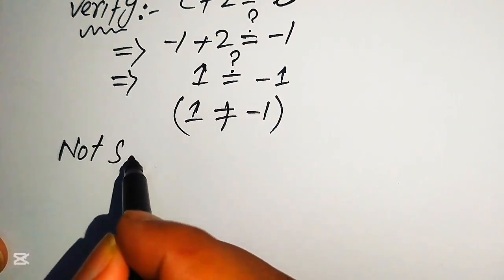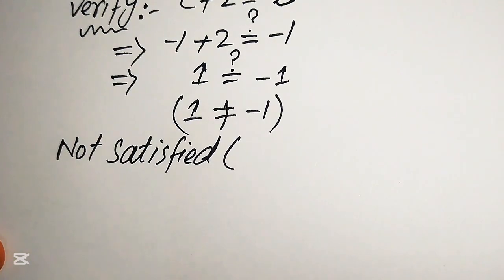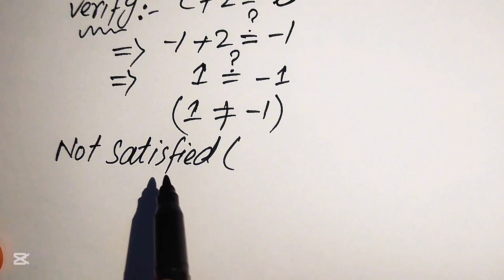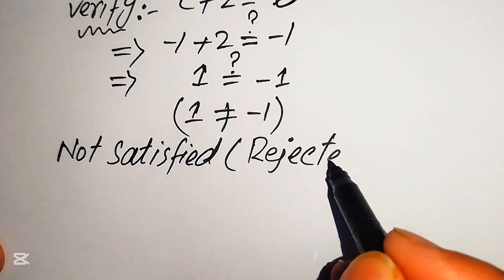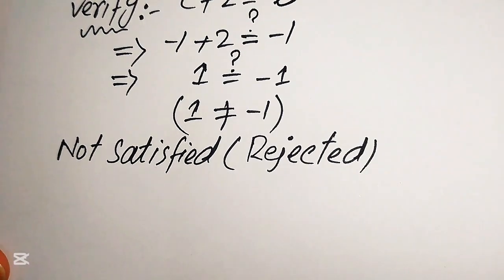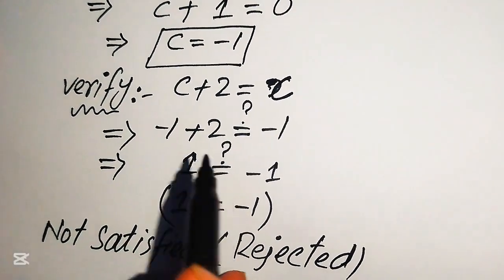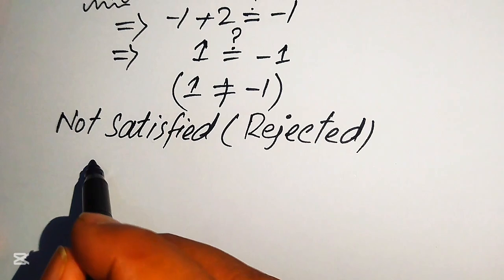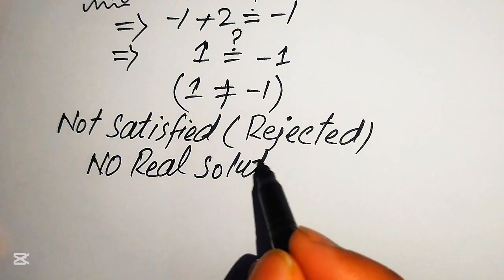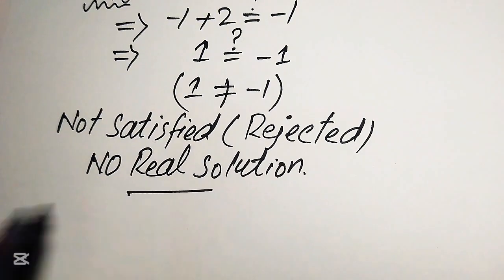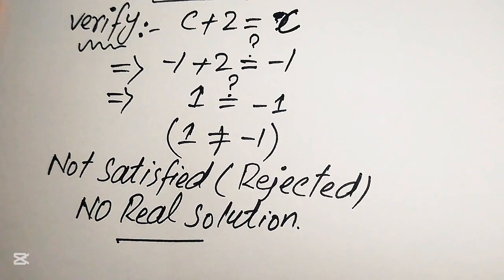Since the value of c is not satisfied, we reject this case. We found only one potential solution and it does not satisfy the equation, which means the given equation has no real solution in general. This is our final answer. Thank you so much for watching this video — please subscribe to my channel for more exciting videos.